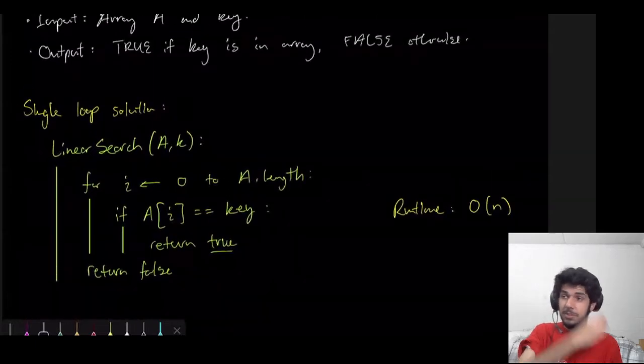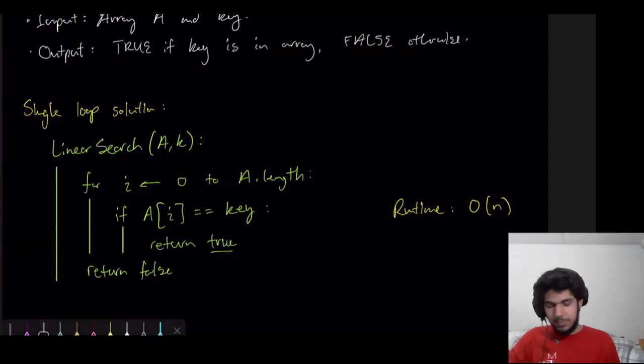So there's a couple of solutions to this. We'll start with the single loop solution, which is probably the easiest. And so our algorithm is called linear search. We input A and our key K. So we do a for loop from 0 to the end of the array, and we just check. Are we pointing to a value in the array that is equal to our key? If so, return true. And if we go through our entire loop and we don't return true ever, then it's not in there, so we return false.